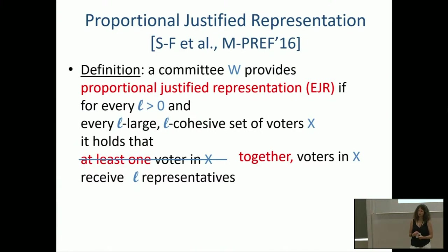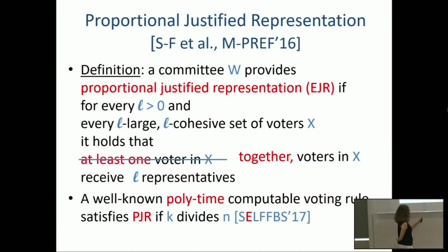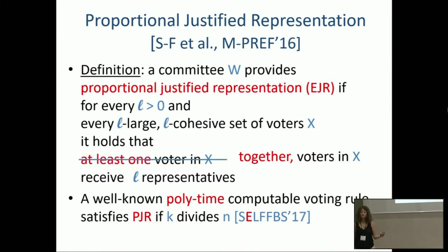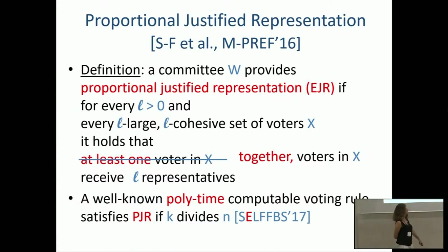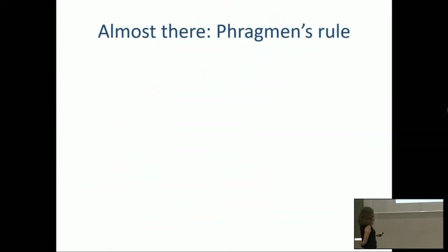My research group — me, Piotr Skowron, and Martin Lackner — identified a fairly well-known voting rule that is polynomial-time computable and satisfies PJR, with the technical condition that K divides N. We sent it to Luis Sanchez Fernandez, they were happy to merge, and we submitted to AAAI. Concurrently, another effort also proposed a voting rule satisfying PJR — the Phragmén rule, proposed by a Swedish researcher who lived roughly at the same time as Thiele.